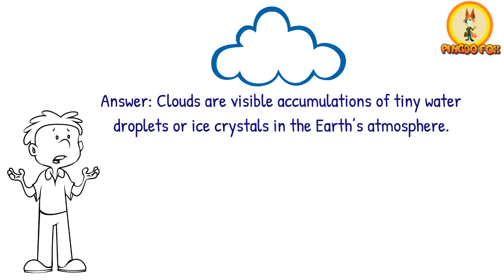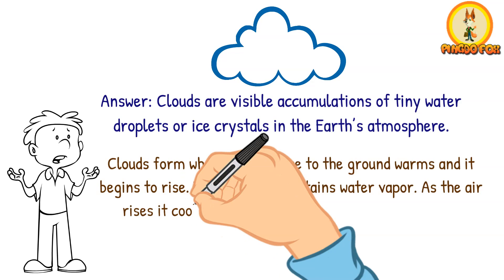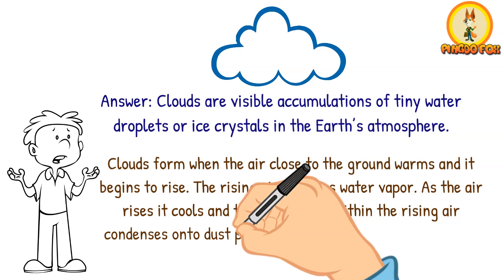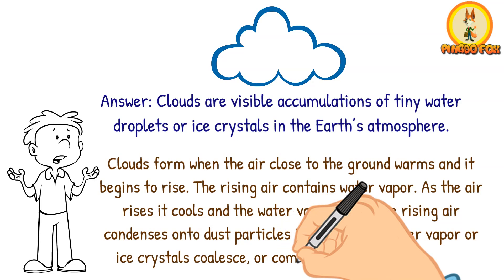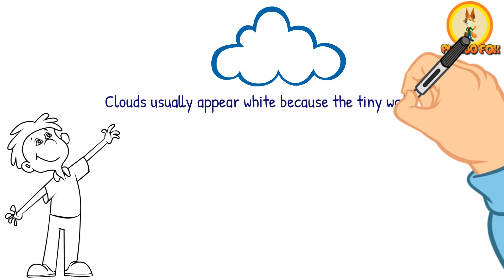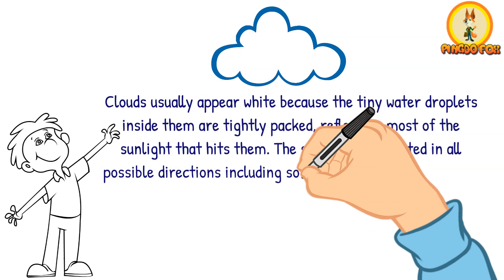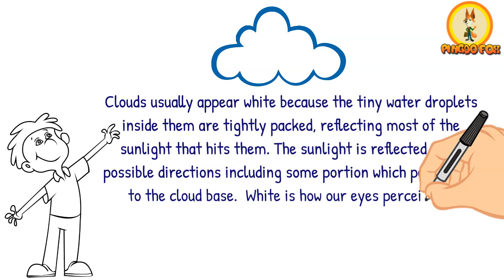Clouds form when the air close to the ground warms and begins to rise. The rising air contains water vapour, and as the air rises, it cools and the water vapour condenses onto dust particles in the air. The water vapour or ice crystals coalesce, or come together, to form clouds. Clouds usually appear white because the tiny water droplets inside them are tightly packed, reflecting most of the sunlight that hits them. The sunlight is reflected in all possible directions, including some portion which penetrates to the cloud base. White is how our eyes perceive all wavelengths of sunlight mixed together.